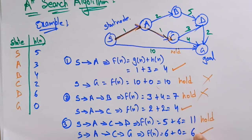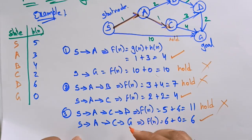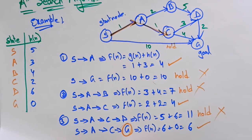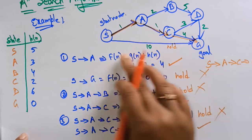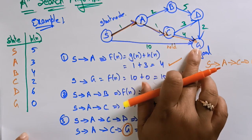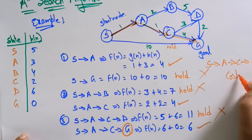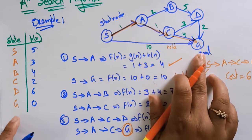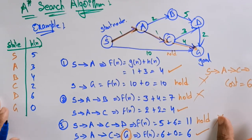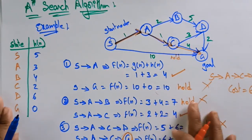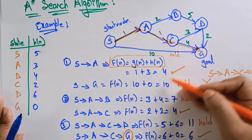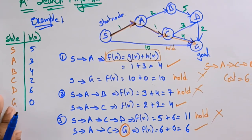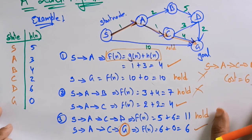I am stopping here because I reached the goal node. The final path is S→A→C→G, and the optimal cost to reach the goal is 6. This is how you implement A* search: calculate F(n) = G(n) + H(n) for each node, and always select the node with the lowest value. Thank you.